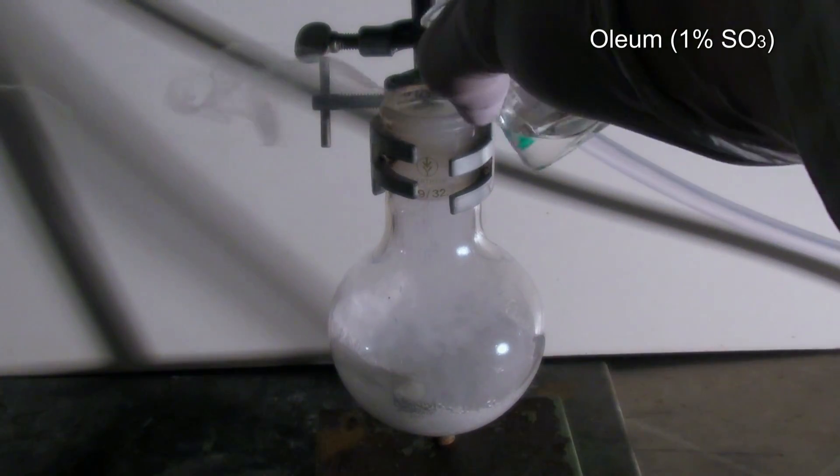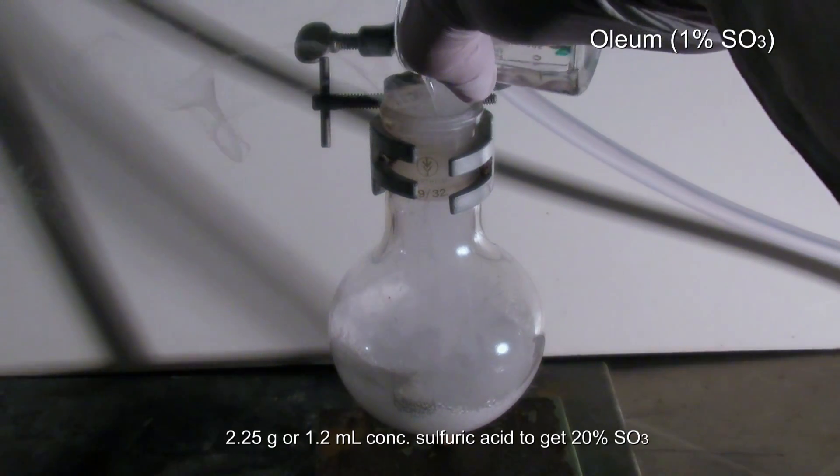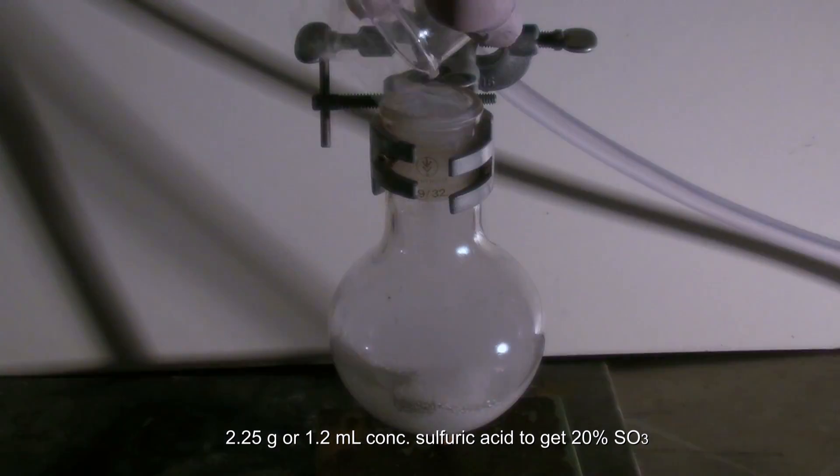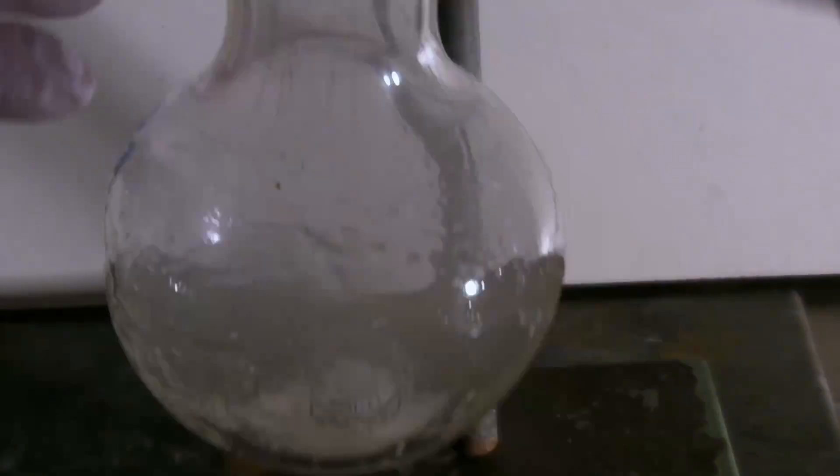To get 20%, only 2.25 grams or 1.2 milliliters of sulfuric acid had to be added. Due to the sulfur trioxide dissolving pretty slowly, the mixture was left to sit overnight.